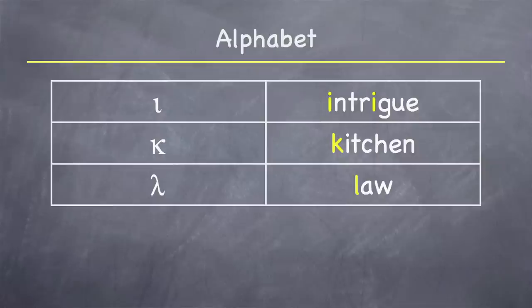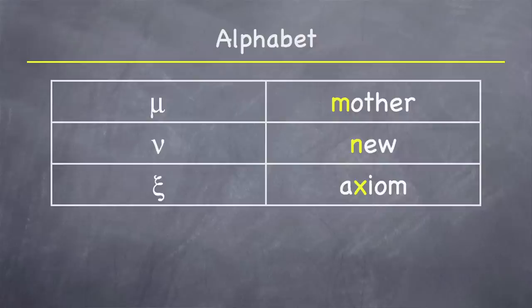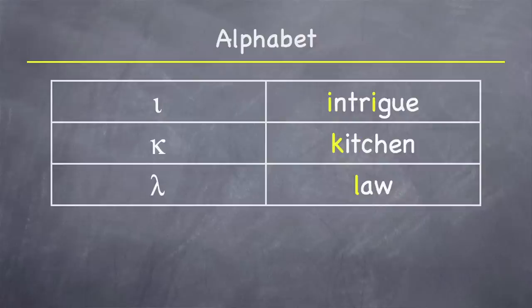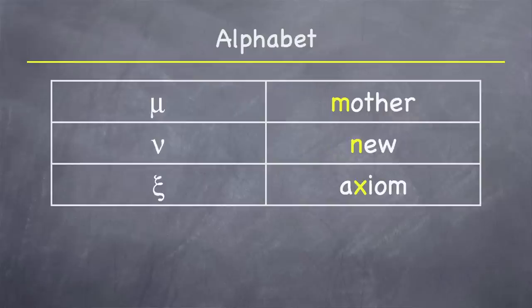Let's go back and review. From the beginning: alpha, beta, gamma, delta, epsilon, zeta, eta, theta. Now the new set: iota, kappa, lambda, mu, nu, xi. Let's do the last six again: iota, kappa, lambda, mu, nu, xi.